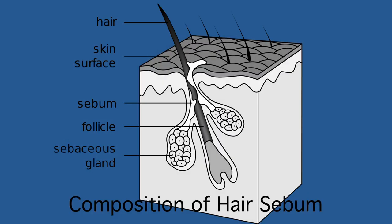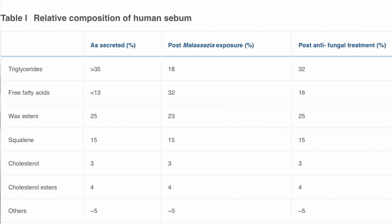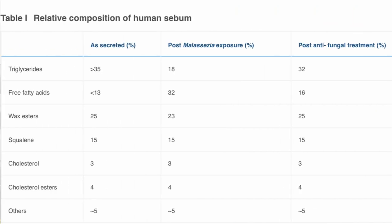We're first going to discuss the composition of our hair sebum. I'm going to insert a graph here — the composition of our hair sebum includes triglycerides, free fatty acids, wax esters, squalene, cholesterols, and other esters.